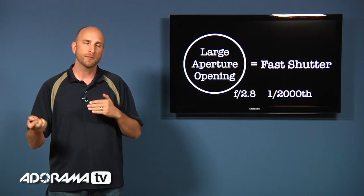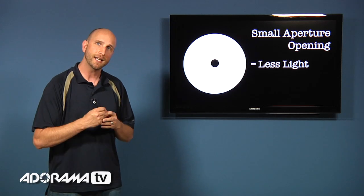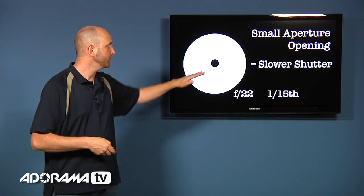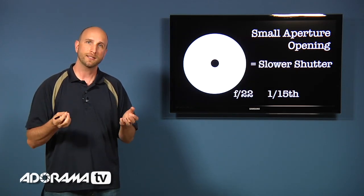Now if we had the exact opposite. Let's say that we had a really small aperture opening. Well less light is coming through the lens. And if we have less light coming through the lens, well we need to take our shutter speed and slow it down to make up for the lower quantity of light.